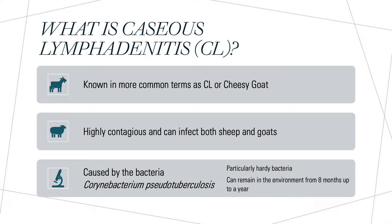If a goat were to become infected with the disease, the rest of the herd would be at risk of contracting it as well due to its contagious nature. It's caused by a bacteria named Corynebacterium pseudotuberculosis, and one thing to note about this bacteria is that it is very hardy, making it remain on farms for quite a while as it can last from 8 months all the way up to a whole year, depending on the surface it's on.